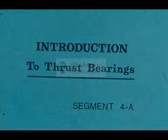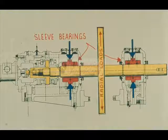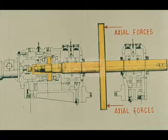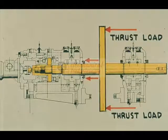Whereas sleeve bearings are designed to carry the radial loads of a rotating element within a machine, other forces acting on the rotating element axially with the shaft are frequently present. This force is the cumulative effect of gas or liquid pressure acting on elements of the rotating assembly. These thrust forces tend to move the rotating element in the direction of the force.